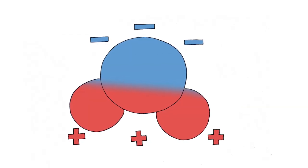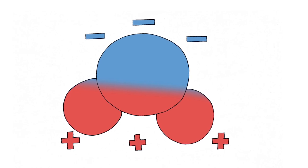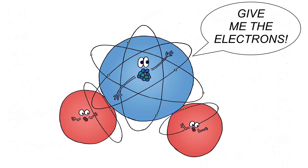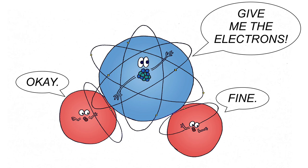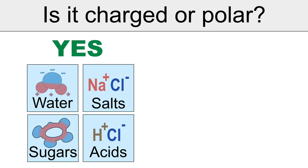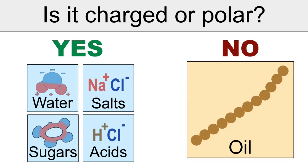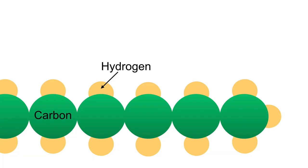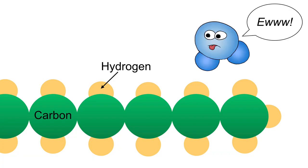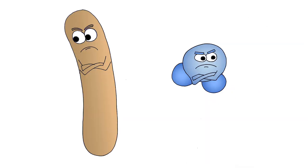To understand why water and oil don't mix, you need to know that water is a polar molecule. One side of it has a negative charge, and the other side is positively charged. And this difference in charge — positive on one side and negative on the other — is what makes water so good at dissolving things. Because salts, acids, and sugars all have charged parts that are attracted to the water. But oil is almost entirely made of hydrogen and carbon. It doesn't have any charges for the water to be attracted to. And this is why oil and water don't mix well together.